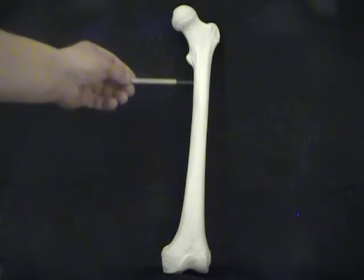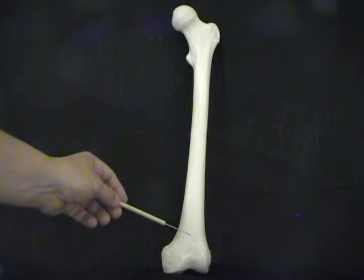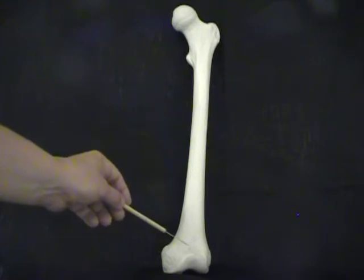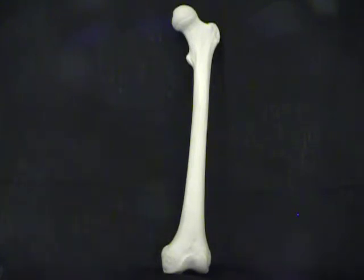If we go down to the distal end of the femur, we see there's this little triangular area indentation here. And this is actually where the patella is going to ride. That's called the patellar surface.